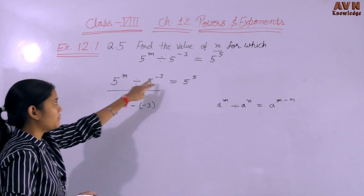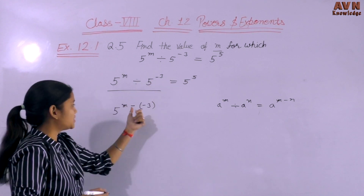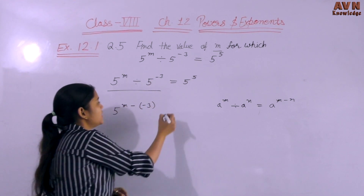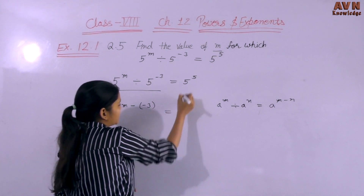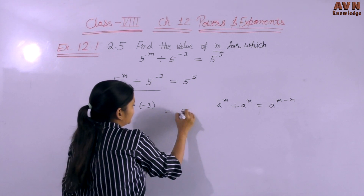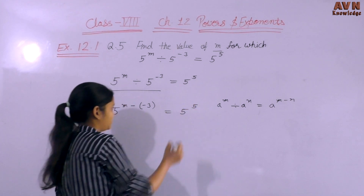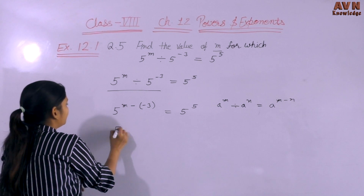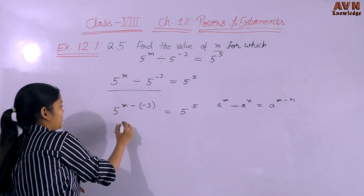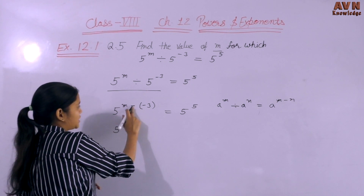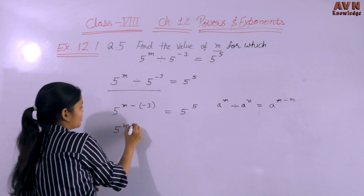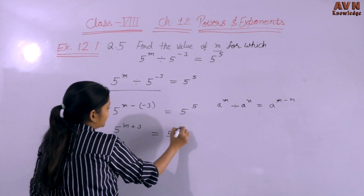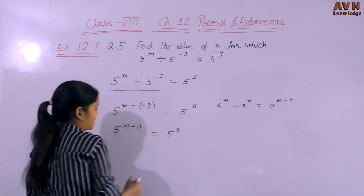The power is M, and we subtract minus 3. So M minus (minus 3) equals 5 raised to the power 5. M stays as it is, minus times minus becomes plus, so we get M plus 3, equal to 5 raised to the power 5.